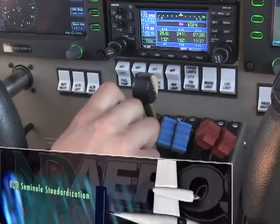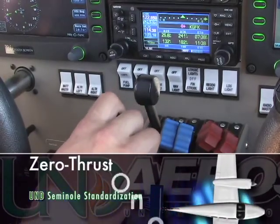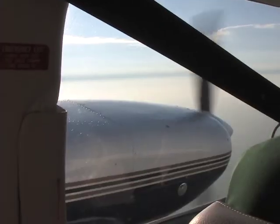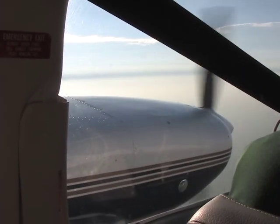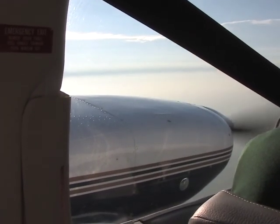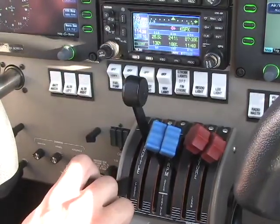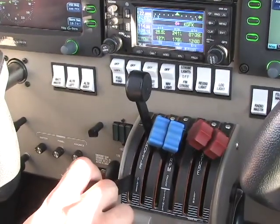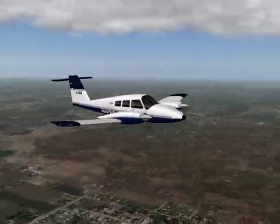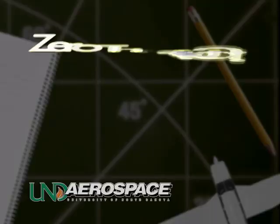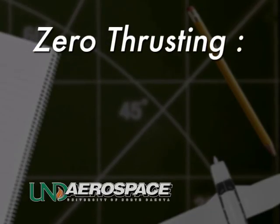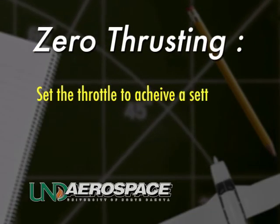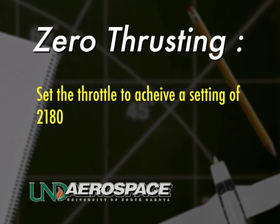The pilot should zero thrust one engine. It may be advantageous to zero thrust the warmest running engine to prevent any further increase in engine temperature. This decision, though, is at the discretion of the pilot in command. In the Piper Seminole at 88 knots, zero thrusting is accomplished by setting the throttle to achieve an RPM setting of 2,180.